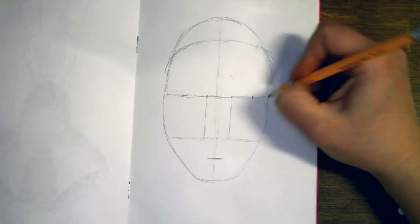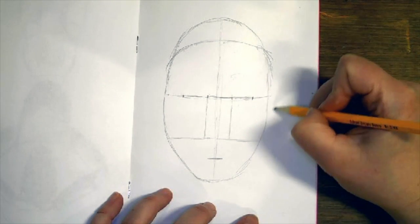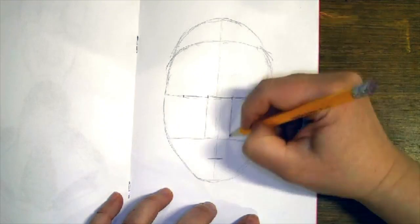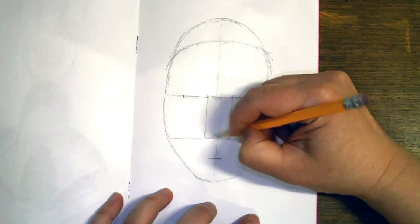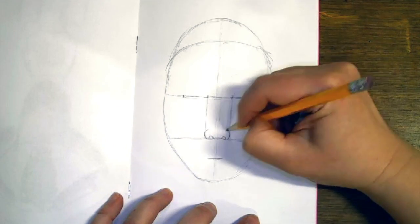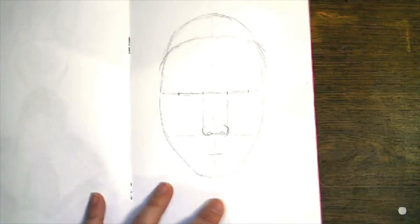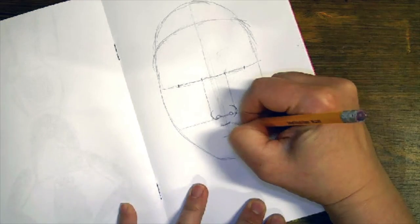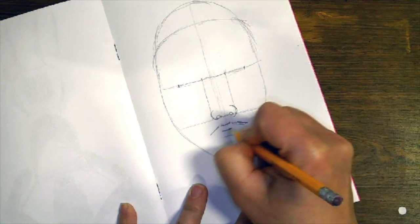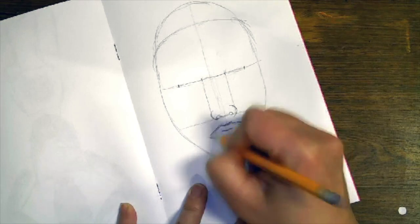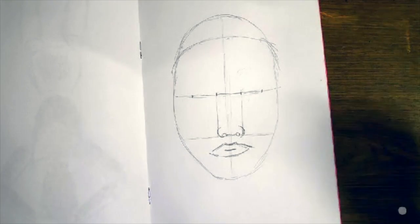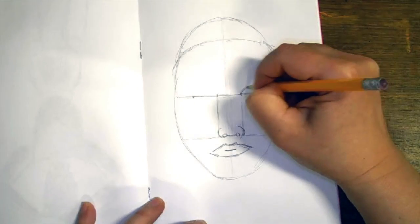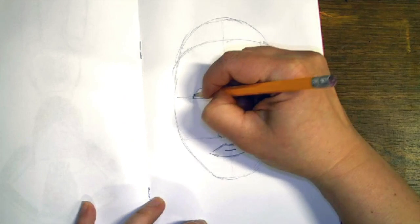From here you can start adding in hairline, you can look at the eye shape and get that in there, add in the bottom of the nose. Remember you're going to add the bridge of the nose when it comes to shading. Add in the mouth. If you need to look up some how to draw mouths or noses, that might be a good way to use YouTube to search up some videos to help you with those because they can be tricky.